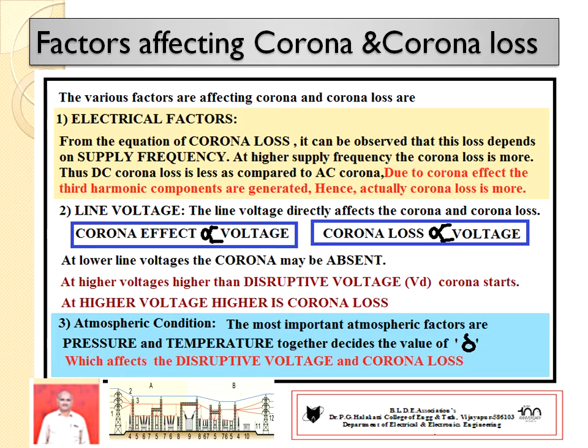Number one: electrical factors. From the equations of corona loss, it is observed that the loss directly depends upon supply frequency F. Hence, at higher frequency, corona loss will be more. This is more objectionable in AC supply. In case of DC supply, corona loss is less — naturally it is less, because it does not depend upon frequency. Hence, DC corona loss is low as compared to AC corona. Due to corona effect, third harmonic components are developed in AC supply systems, and hence corona loss goes on further increasing.